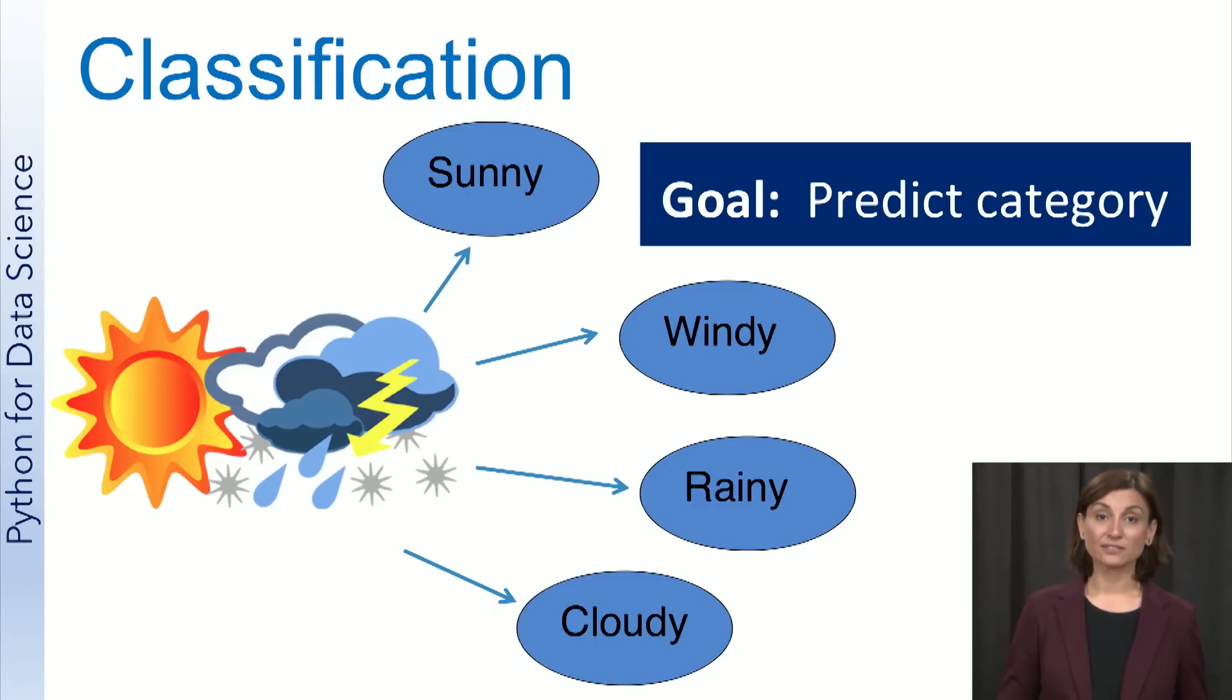In classification, the goal is to predict the category of the input data. An example of this is predicting the weather as being sunny, rainy, windy, or cloudy. The categories to be predicted are sunny, rainy, windy, and cloudy in this case.